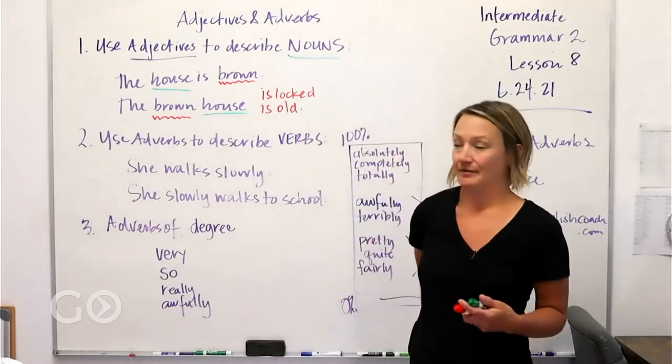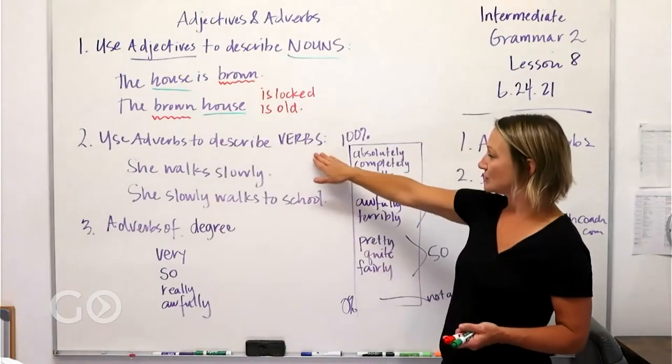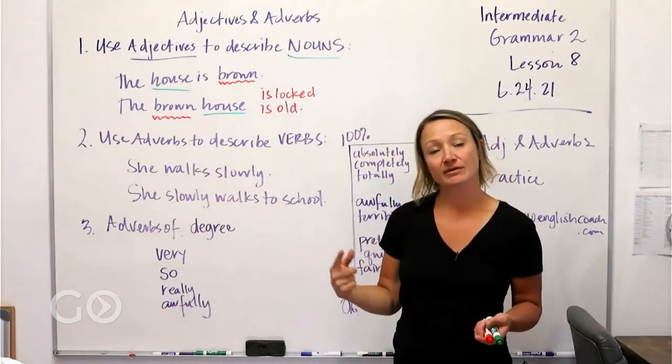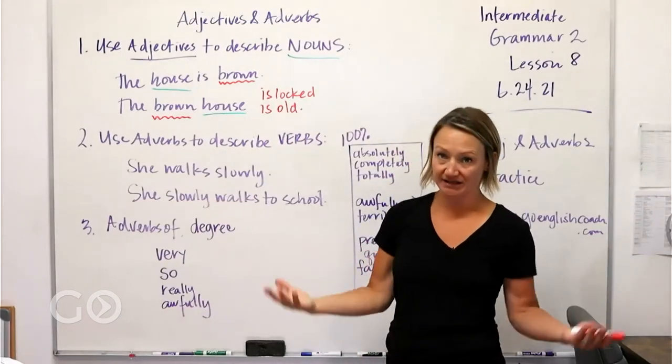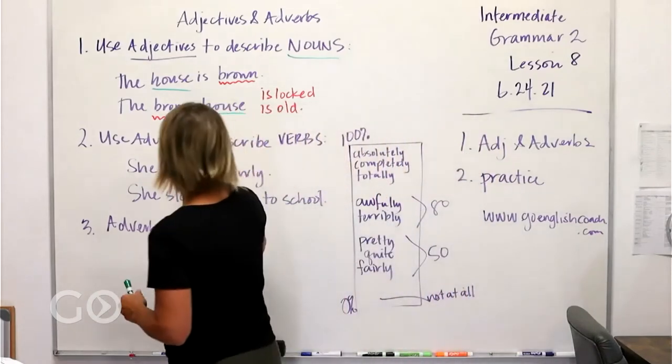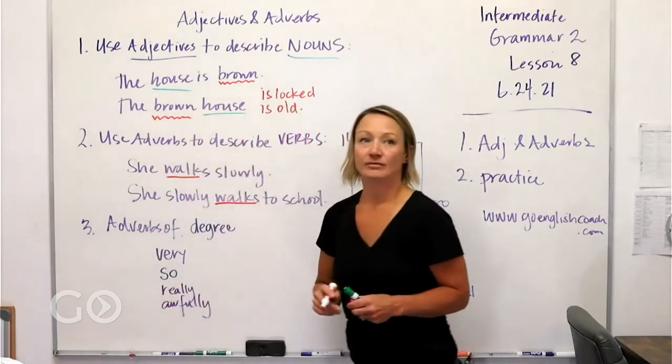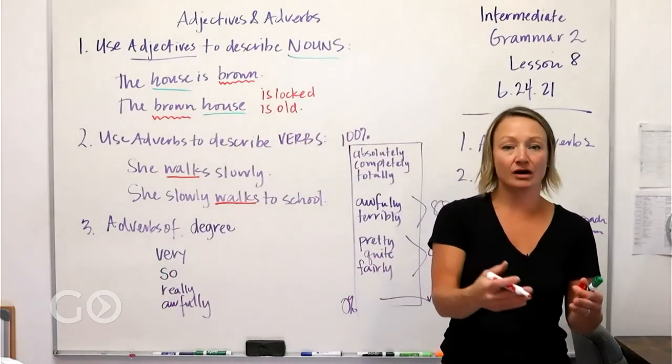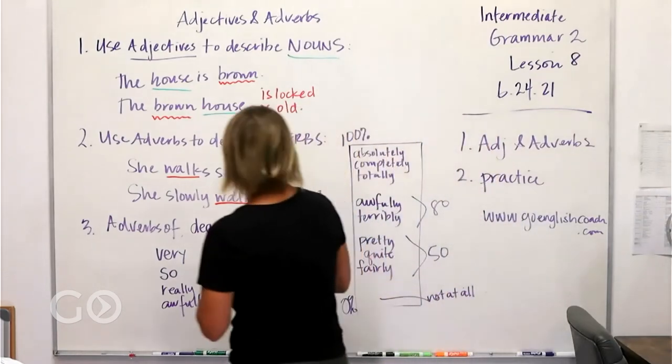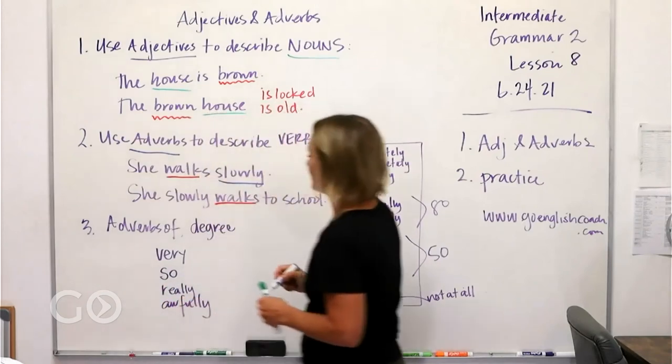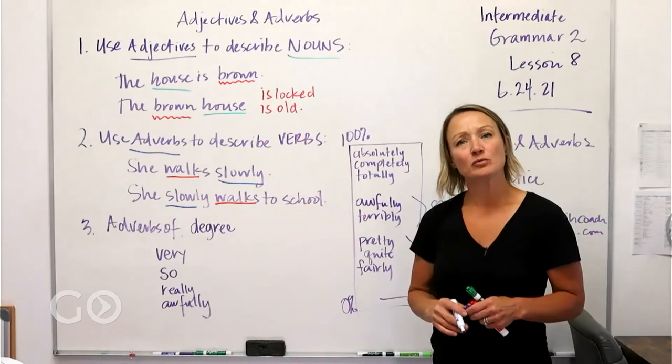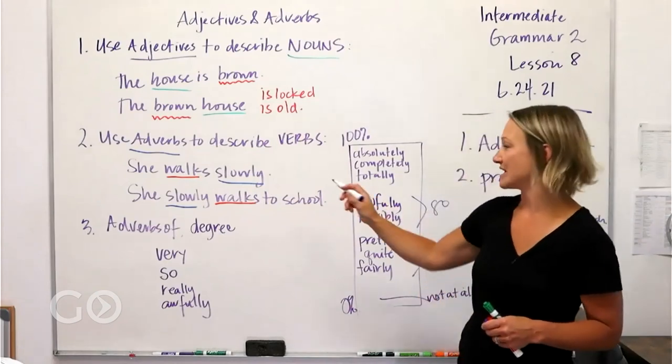Our next little rule here is that we use adverbs to describe verbs, or like how something is done. So here's our verb—where's the verb here? First of all, our verb is walks. She walks how? She walks slowly. So this is your adverb. Let's make the adverb blue. So you can say she walks slowly. Some people would say slow, but it's more correct to use the L-Y.